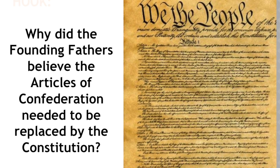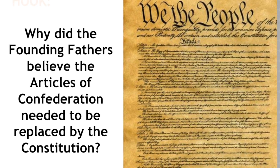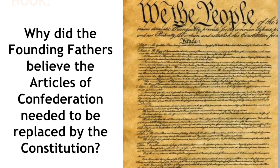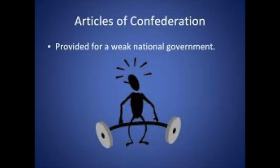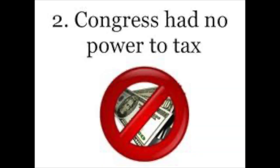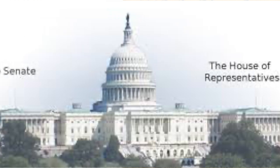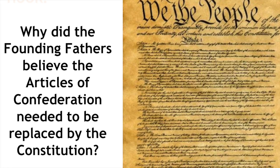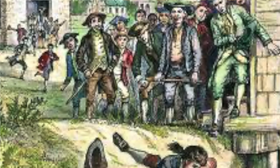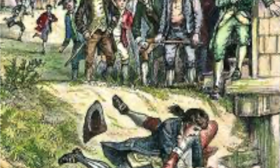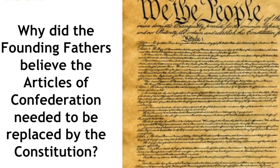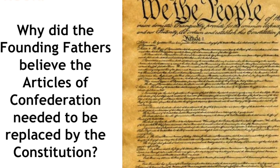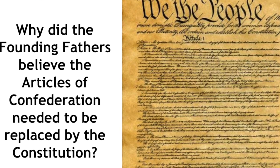Think about what we've talked about last week as far as the weaknesses in the Articles of Confederation. We know that they created a weak national government, they had no power to tax, and there was only one branch of government. All of these things, including Shays' Rebellion, really triggered a need for a meeting to try and change the Articles of Confederation.